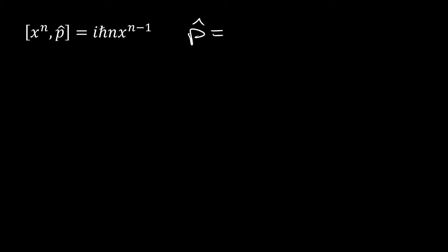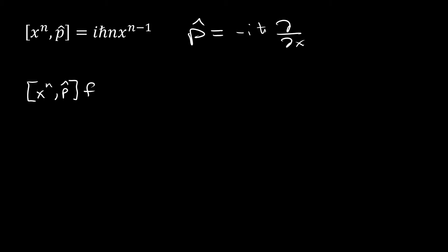Moving on to part b, we have the momentum operator and x to the n, and we want to show the commutator identity. We're going to use p-hat equals minus i·h-bar partial over partial x. Just assume it to be one-dimensional. Because we have this derivative, we're going to need to work with a function. So we're going to take [x^n, p-hat] and apply it to some arbitrary function f of x.